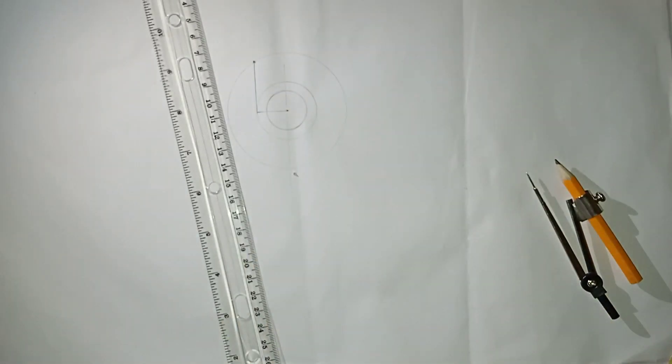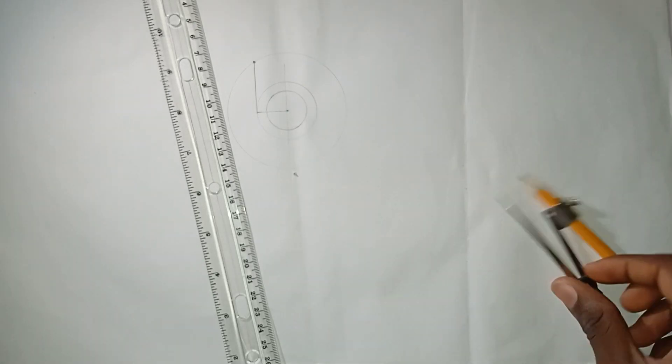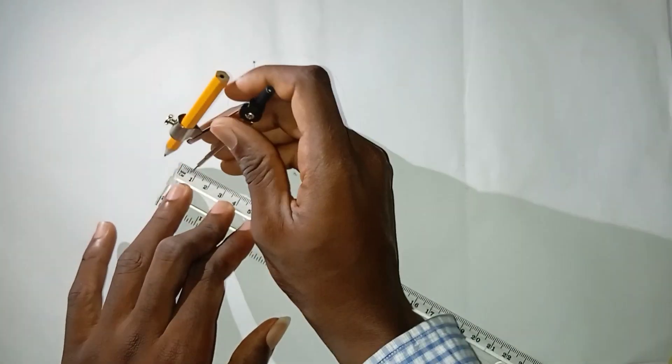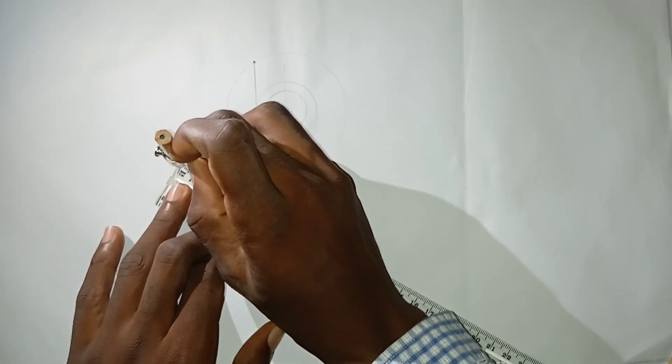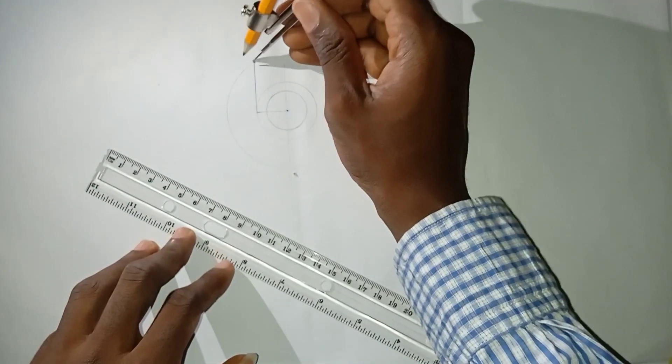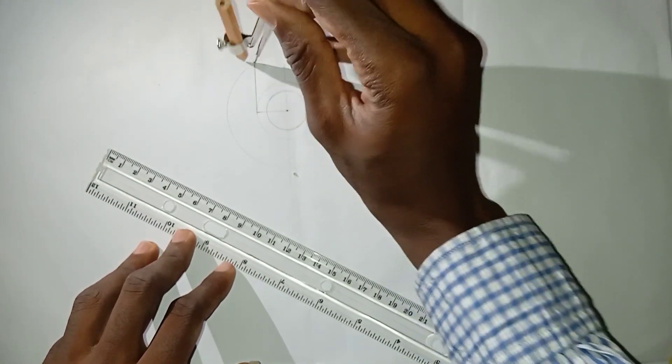Now since the question tells us that it's a knife edge follower and the follower diameter is 12, that means the radius will be 6. So this is 6 and I'll draw a circle here of radius 6 millimeter.